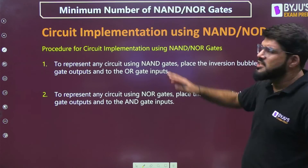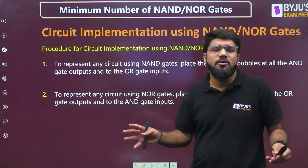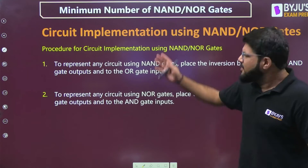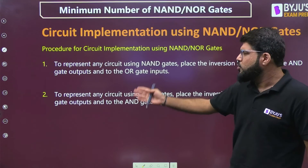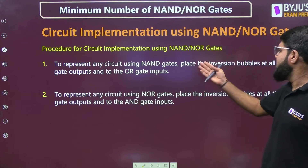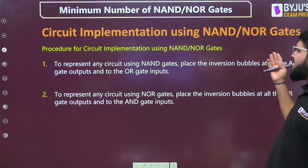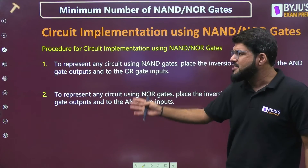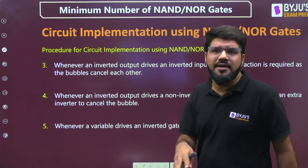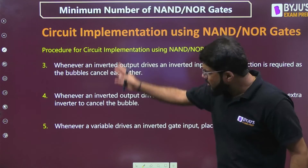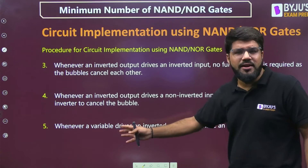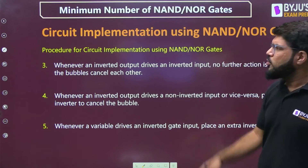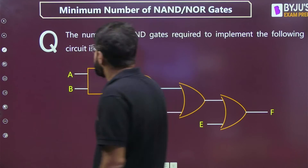Now since this is Trickopedia, I want to give you the trick directly. To convert any circuit using NAND gates: place bubbles at AND gate outputs and OR gate inputs. Similarly for NOR gates there are 3–4 points. I'm leaving the theoretical rules for your reference — you can read them or take a snapshot — but let me go directly to the problem and explain the working principle.